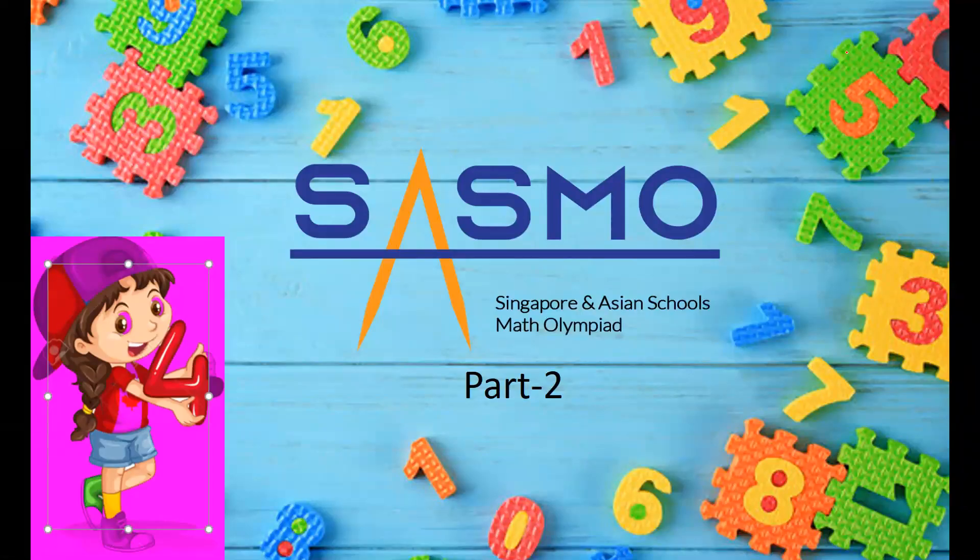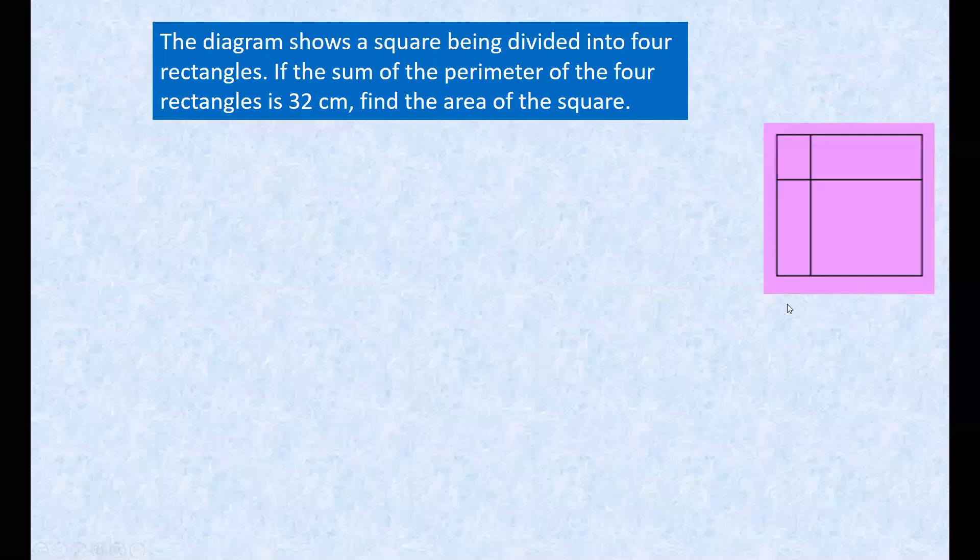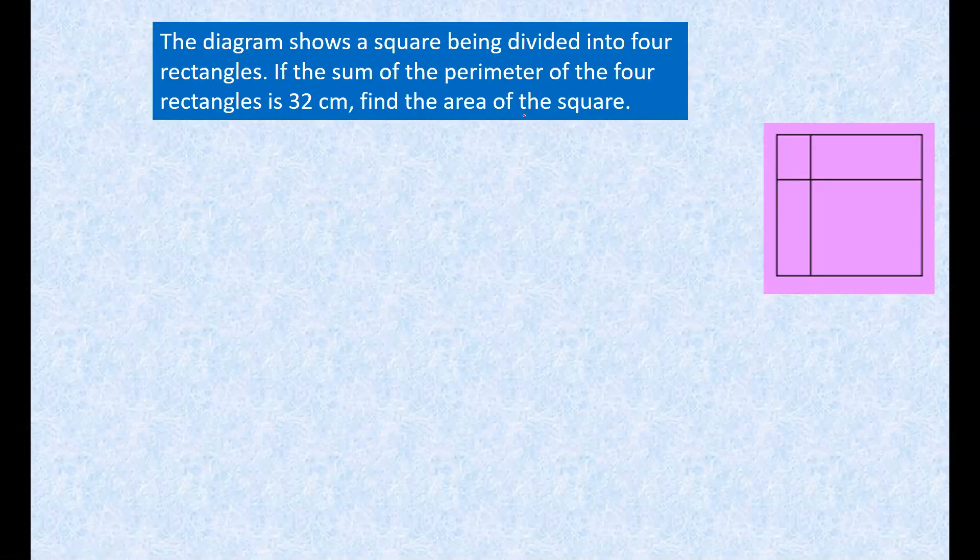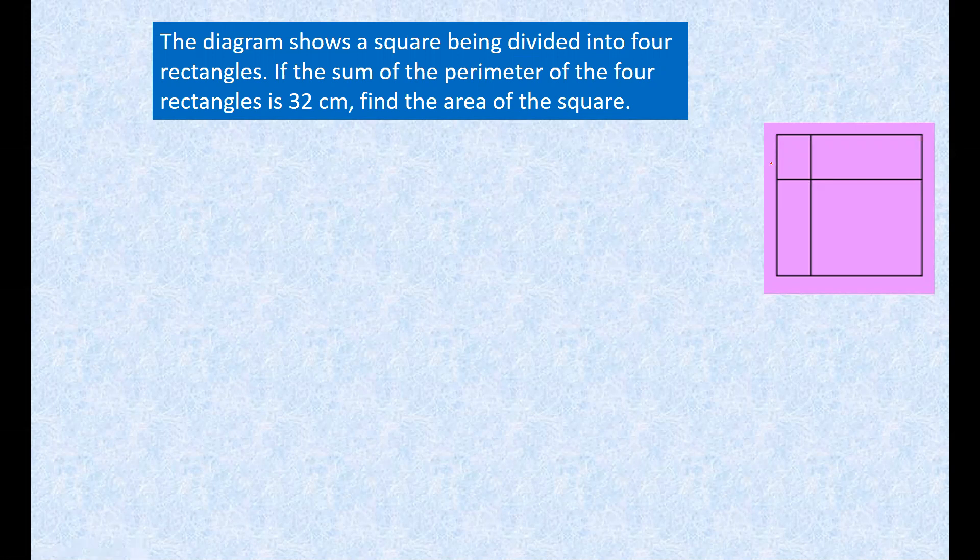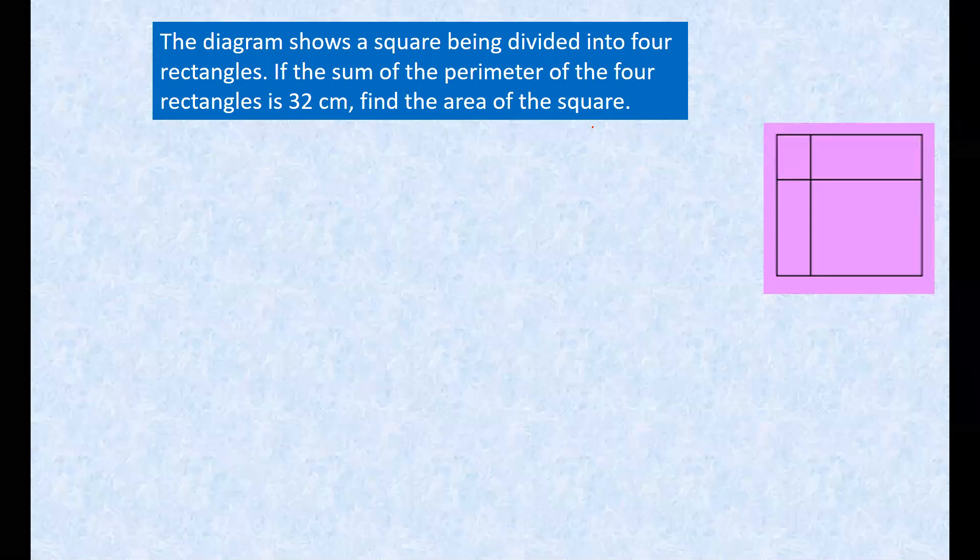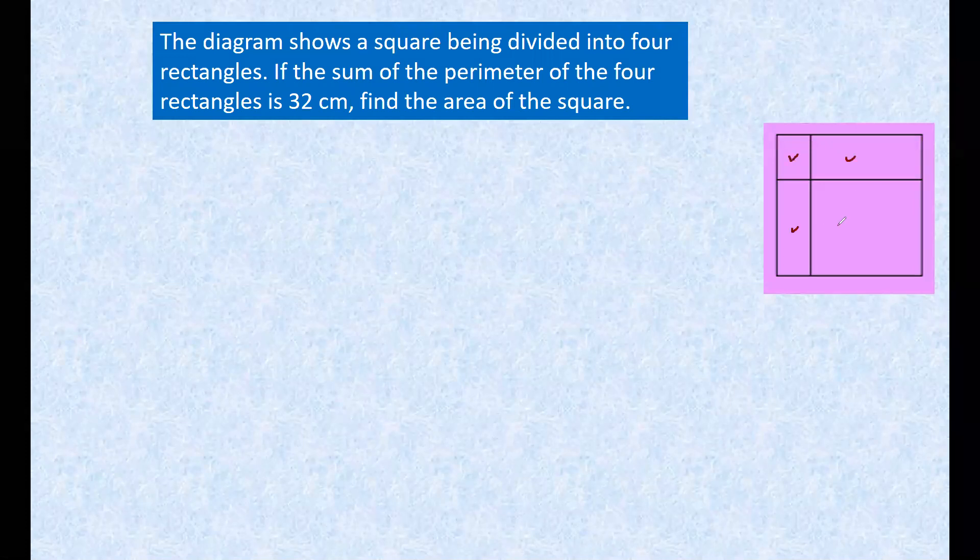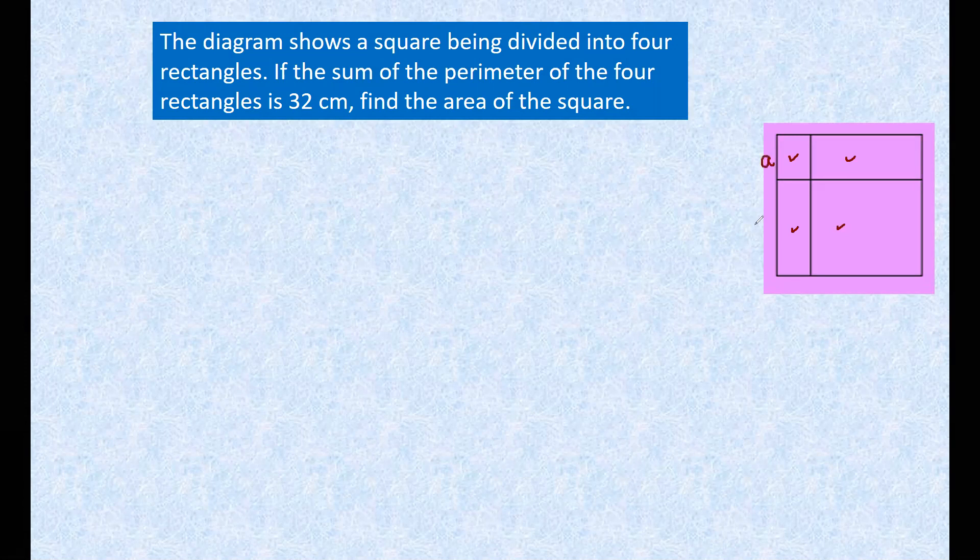Hi everyone, good evening. Today we are here to learn another set of SASMO questions, grade 4. Let's start. It says the diagram shows a square being divided into four rectangles. So let's divide it - these are the four rectangles and this is our square.